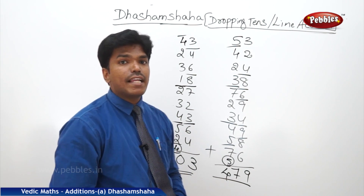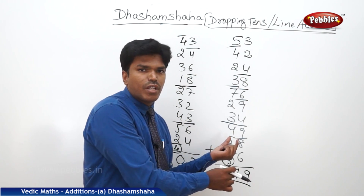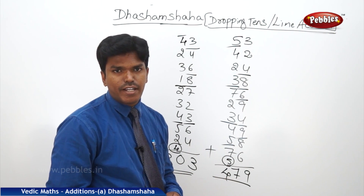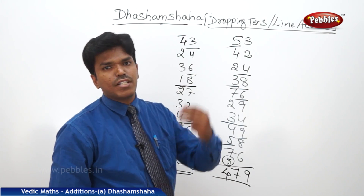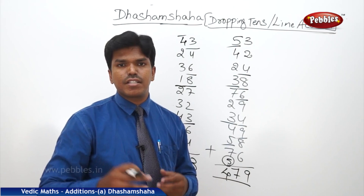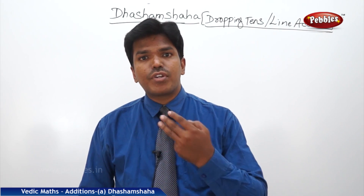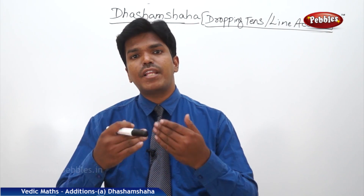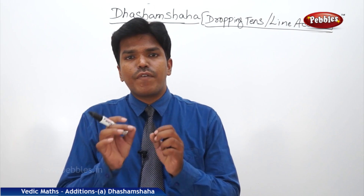That's how you can easily do it. Remember: if you save only the remaining ones after dropping 10, it will save your time. Now let us take the last example with 3 or 4 digit numbers in the line — how to do it fast. Let us take a 3-digit example as well as a 4-digit example — 3-line addition and 4-line addition — so you will get very good clarity.